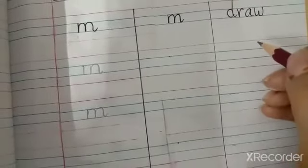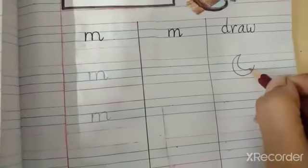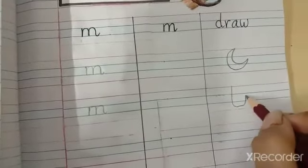And over here students, you have to draw by your own self. Okay, like this. You can draw moon, moon. Okay, you can draw milk.